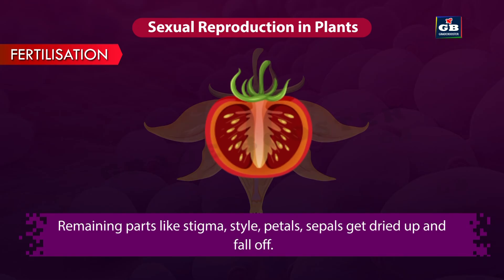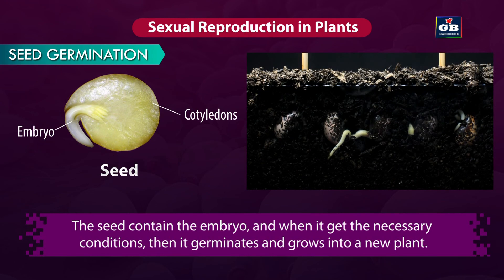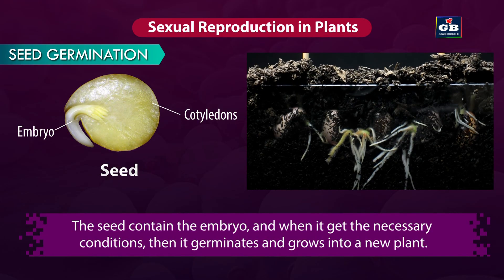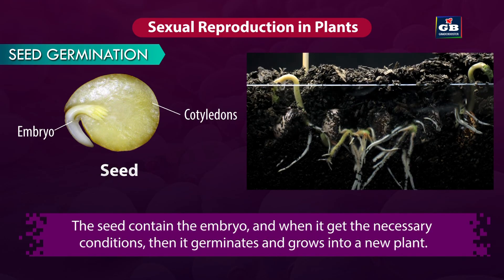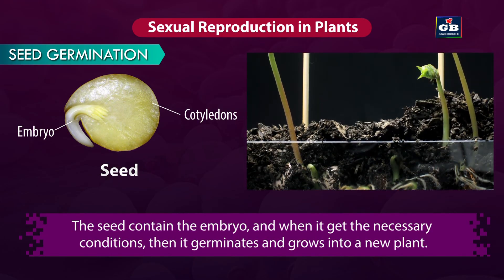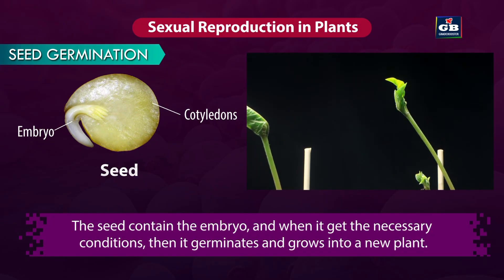The remaining parts like stigma, style, petals, and sepals get dried up and fall off. The seed contains the embryo, and when it gets the necessary conditions, it germinates and grows into a new plant. This is about the sexual reproduction in plants.